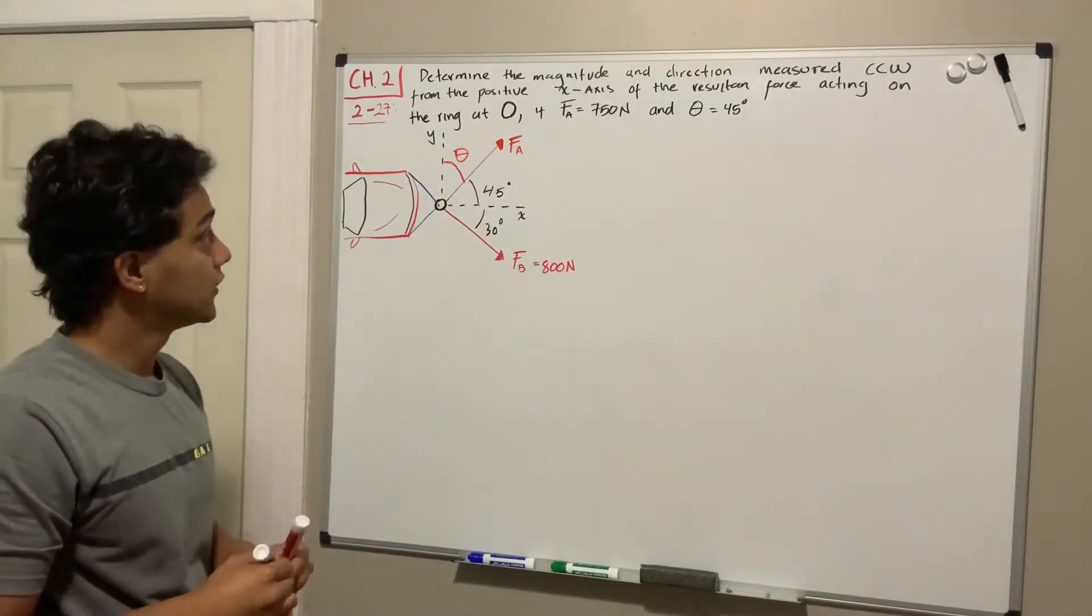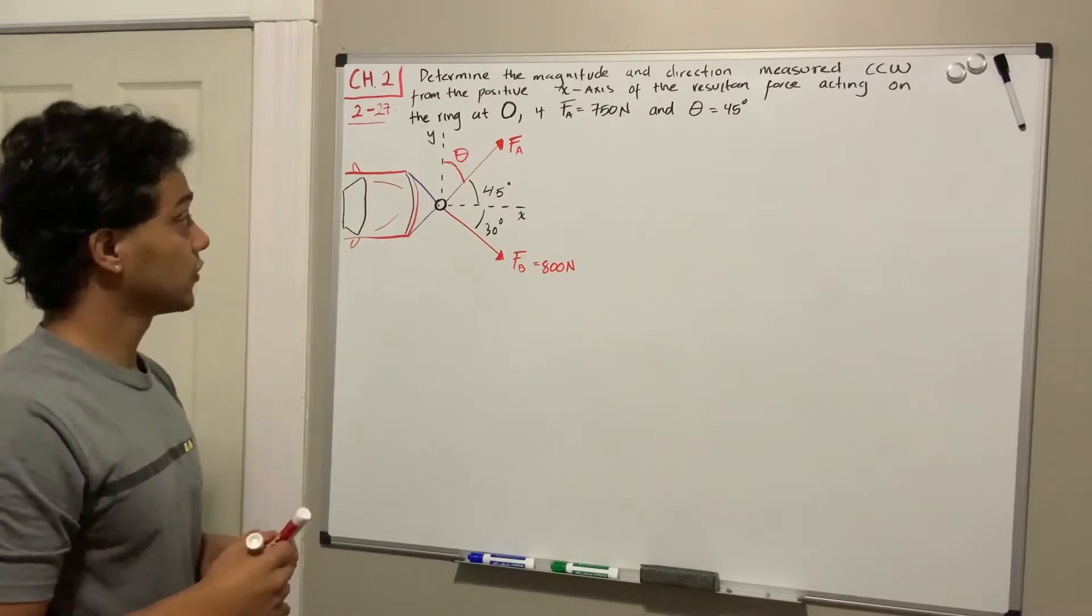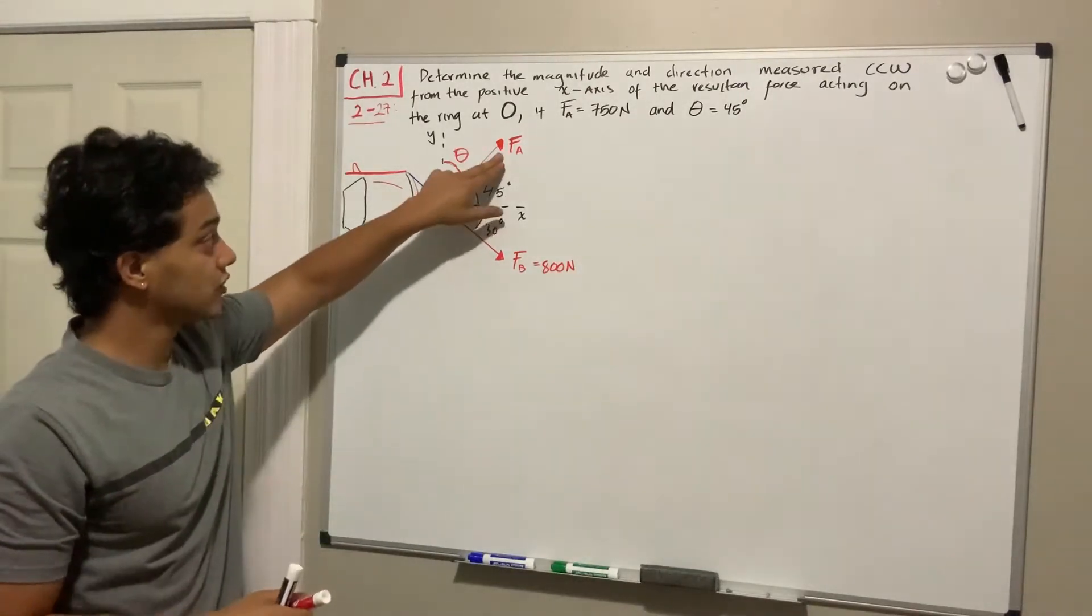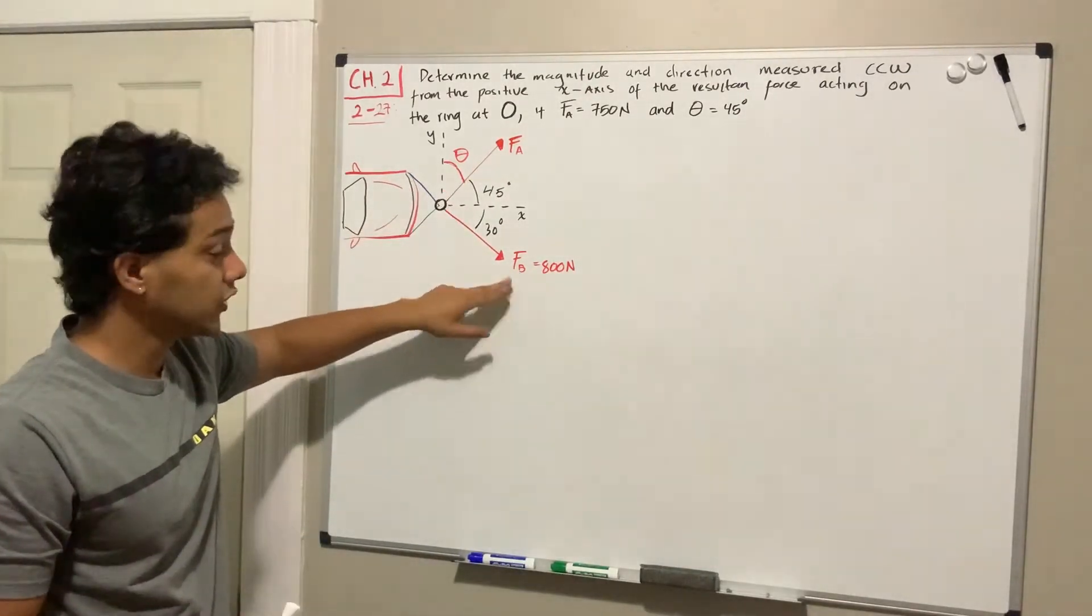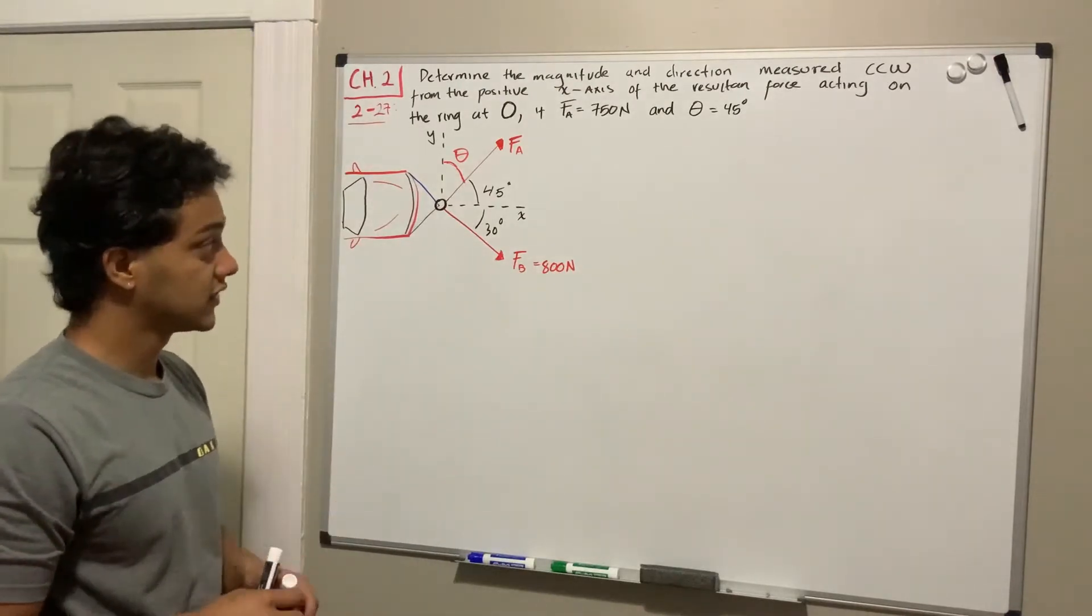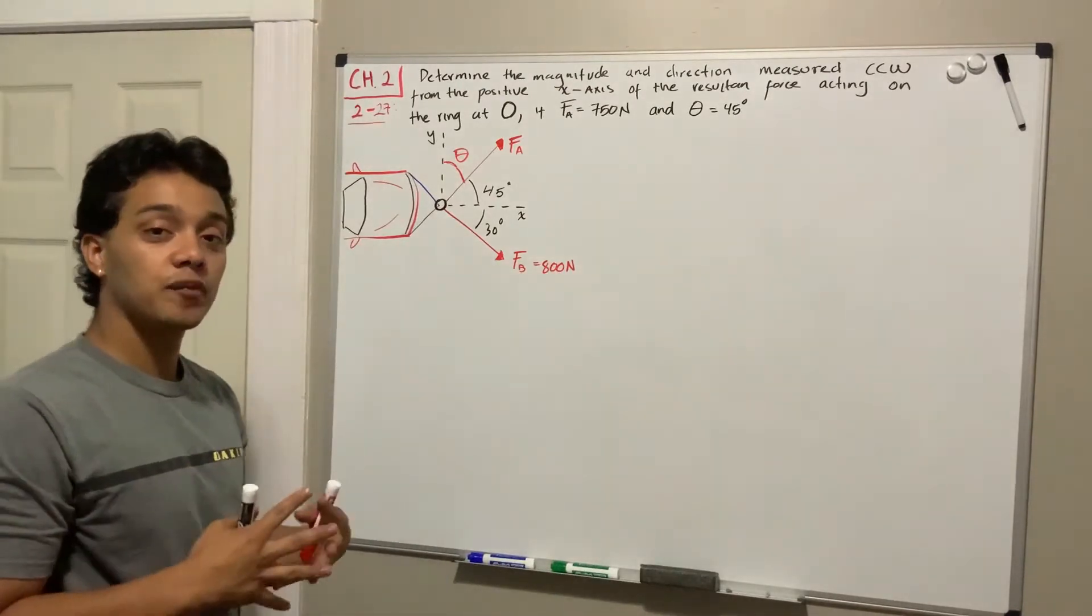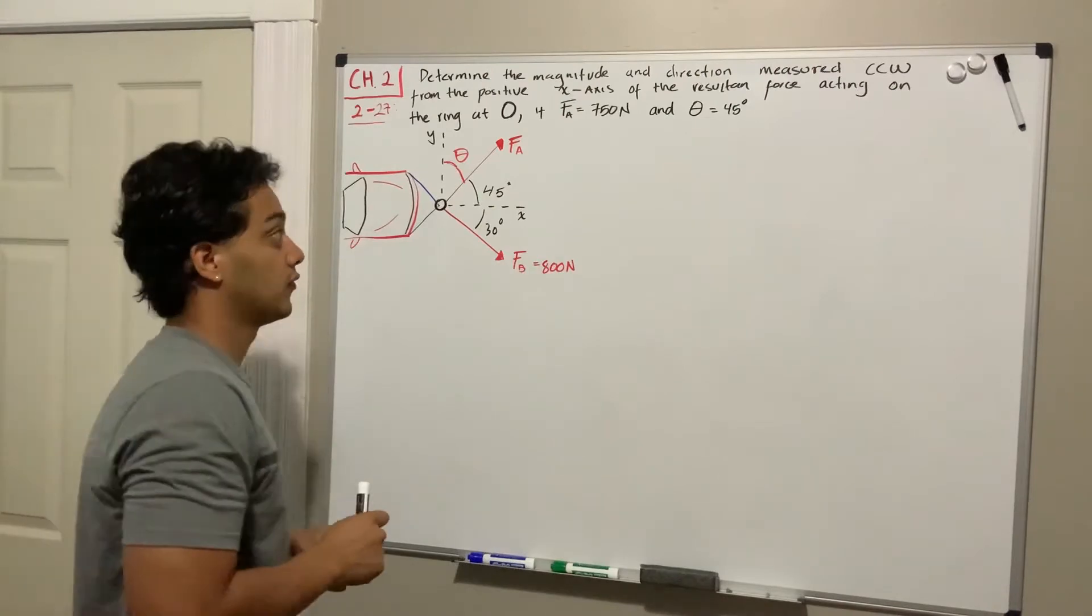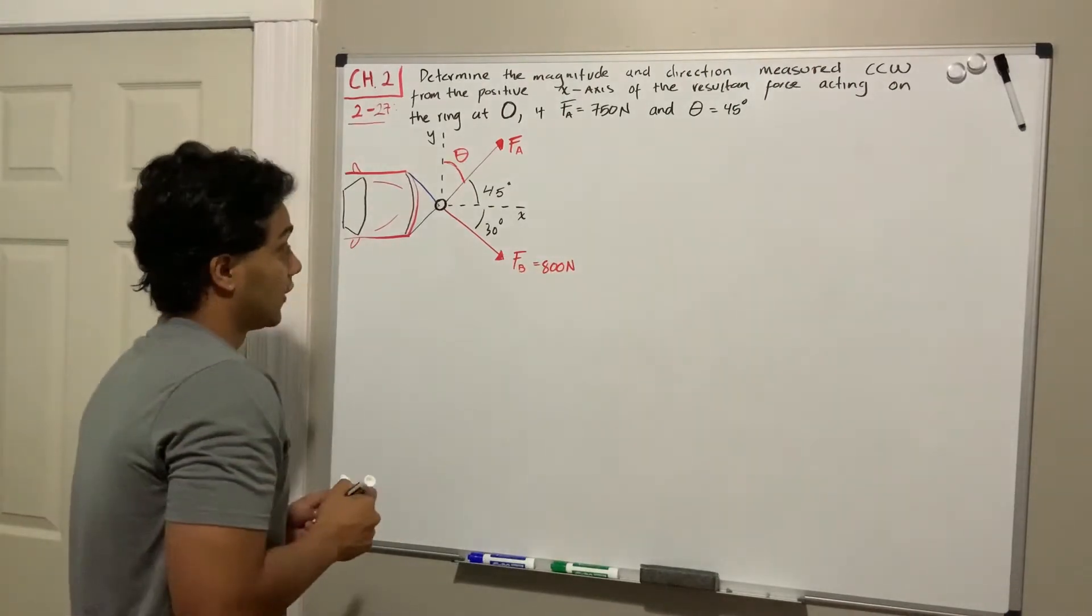If we want to find the resultant, we're going to decompose F_A and F_B into its x and y components. After that we're going to add them up and we're going to do the magnitude for the resultant.